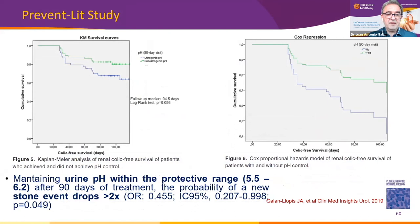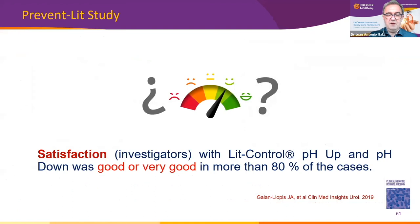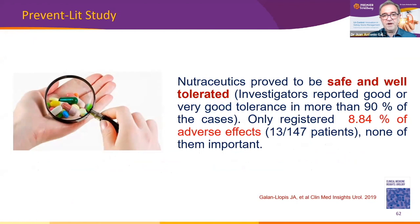The probability of a new stone event dropped more than two times. Investigators' satisfaction with Lead Control pH Up and pH Down was good or very good in more than 80 percent of cases, and reported tolerance was over 90 percent, whereas adverse effects — all of them minor — were registered in less than nine percent of patients, with 13 out of 107 patients affected.